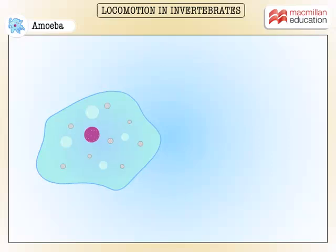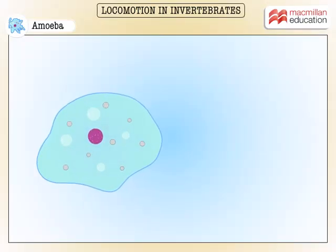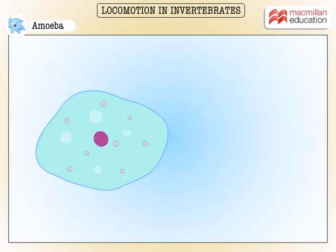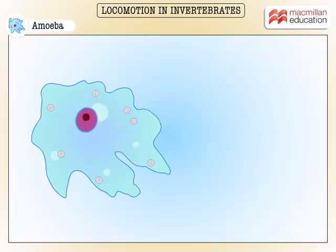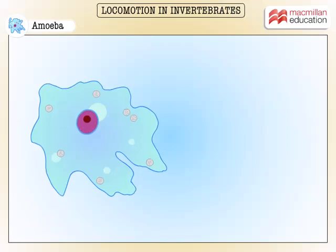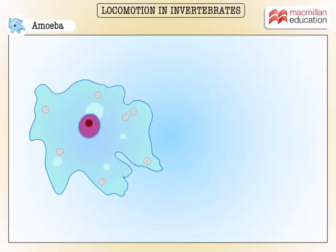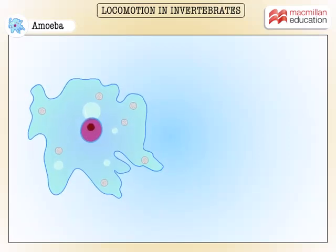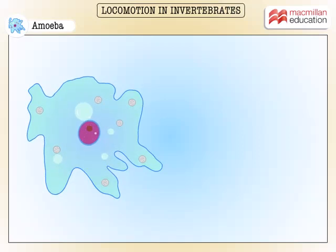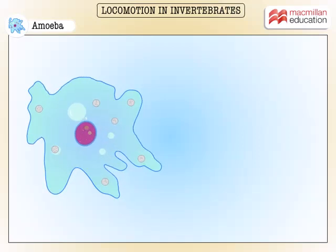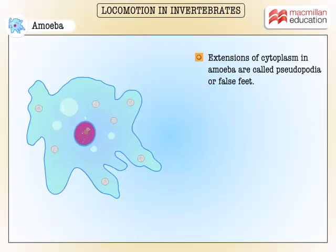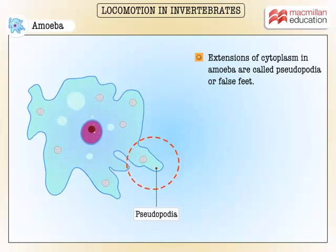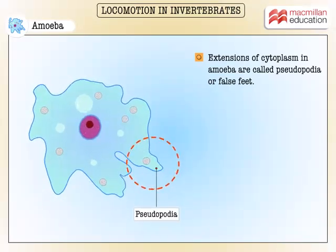This unicellular organism is called amoeba. Can you see the protruding structures on its body? They are extensions of their cytoplasm and not permanent structures. That is the reason why these extensions are called pseudopodia, or false feet.